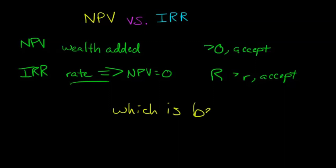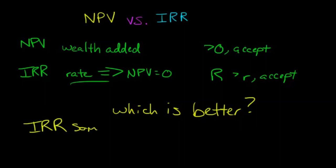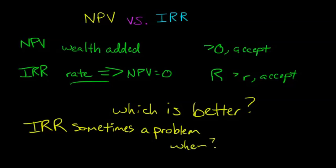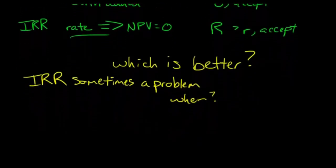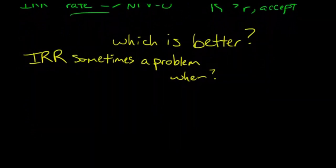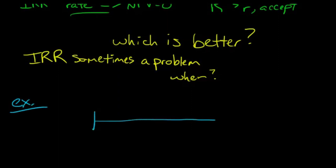Both NPV and IRR are effective methods, but the IRR cannot always be used. It's not that IRR is a bad metric, but there are situations where it creates problems. Let's look at an example: a project with a cash outflow of $8,000 at the start, an inflow of $50,000 at the end of year one, and another outflow of $50,000 at the end of year two.